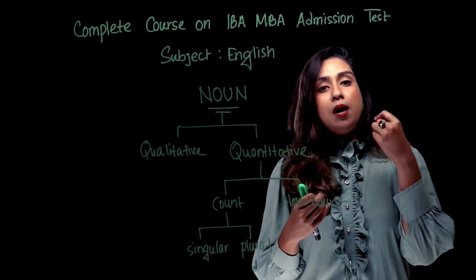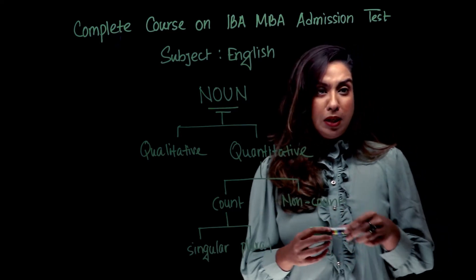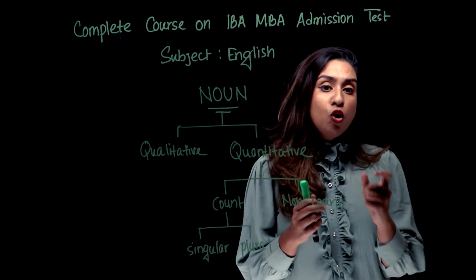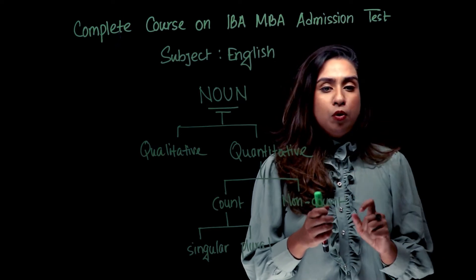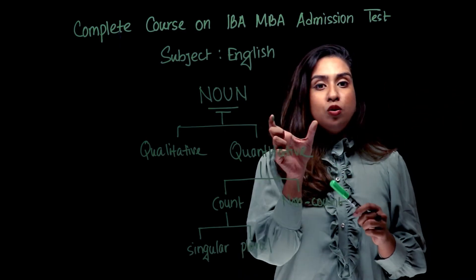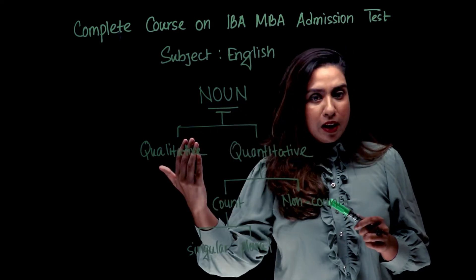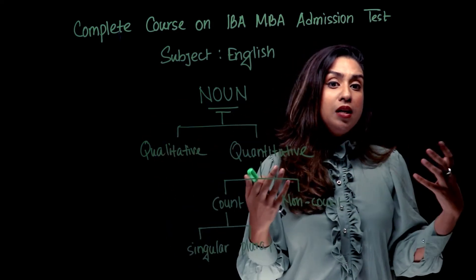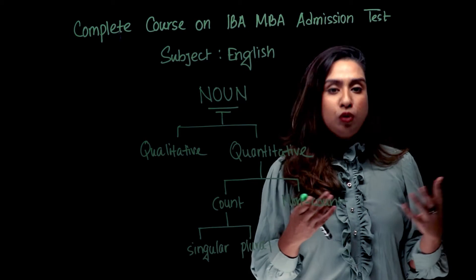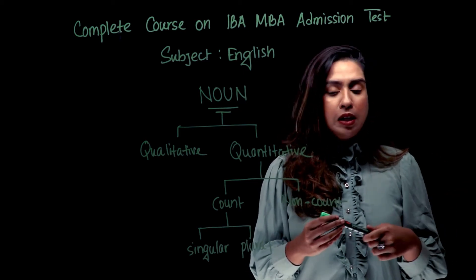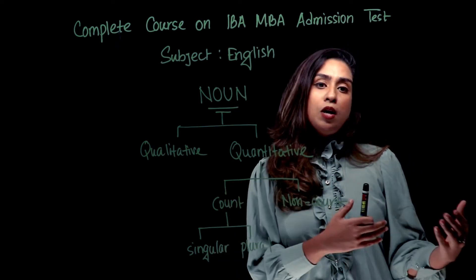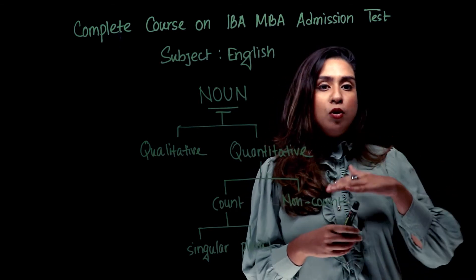The ingredients are also non-count. Even if you talk about material, the material is non-count. For example, the chair is made of wood. You cannot say one wood, two woods. Similarly, a dress is made of cotton — cotton is non-count. So all the ingredients and raw materials are non-count nouns.